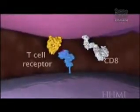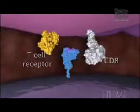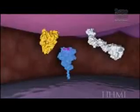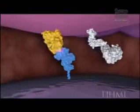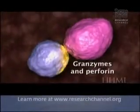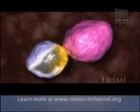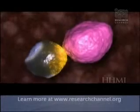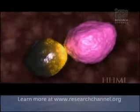A cytotoxic T cell comes along, and if it recognizes foreign viral protein in an MHC class I molecule, the T cell receptor on the cytotoxic T cell will be able to directly engage through conformational recognition, along with the CD8 molecule. That leads to the release of granzymes and perforin that actually kill the virus-infected cell.